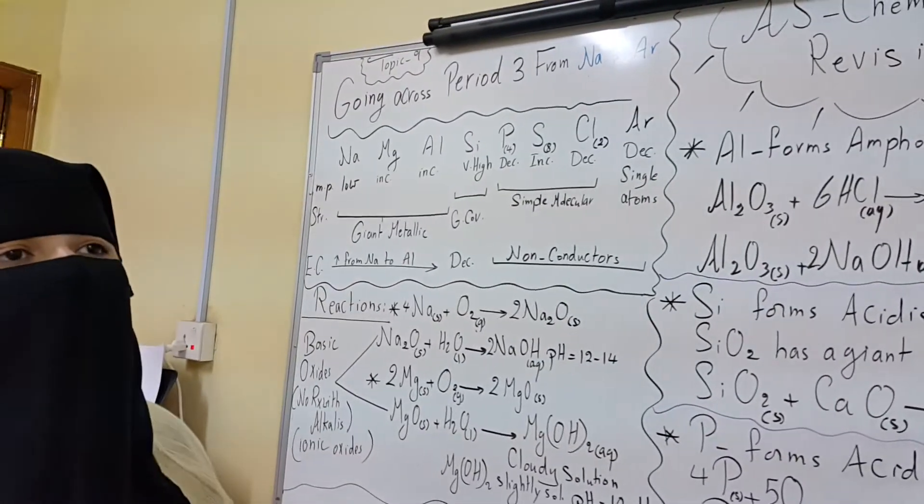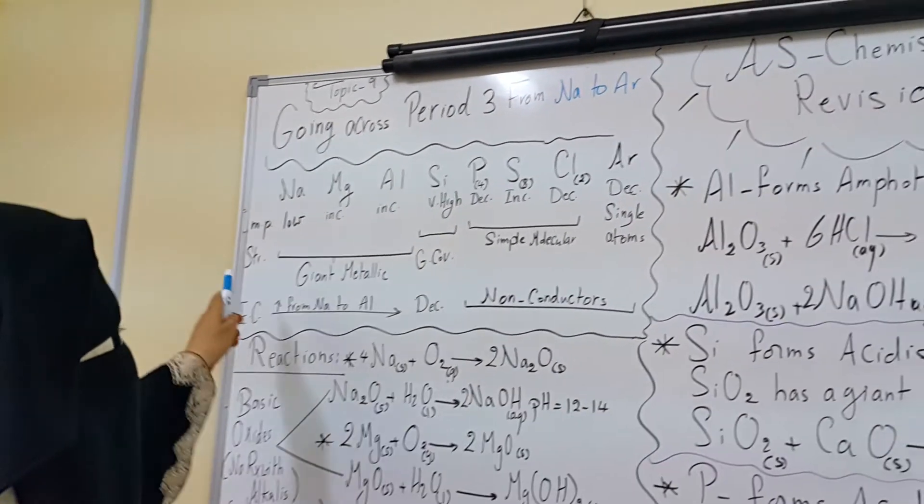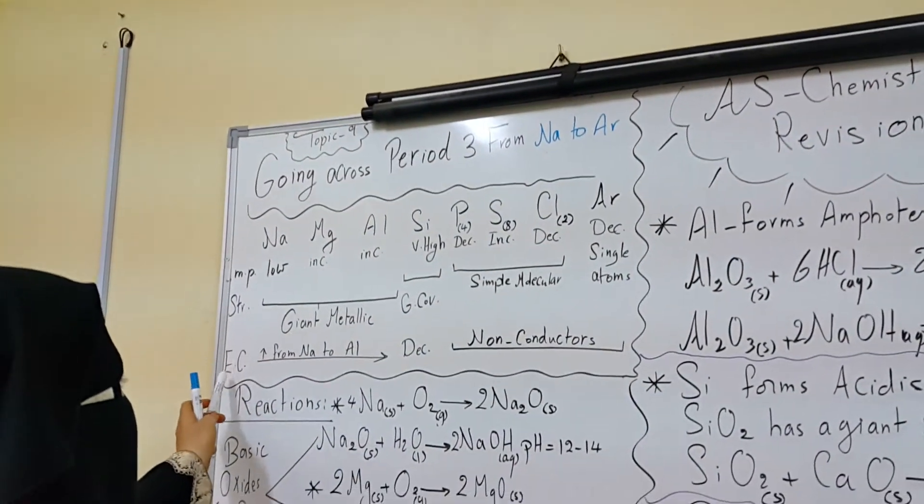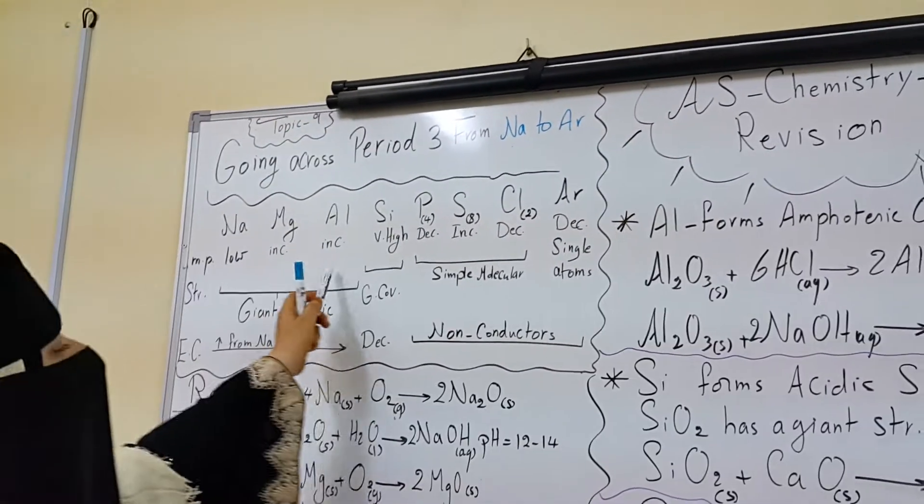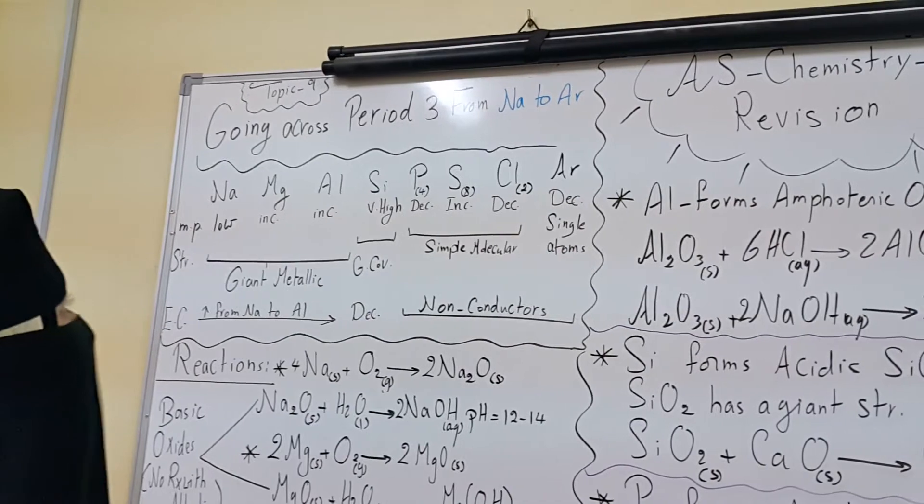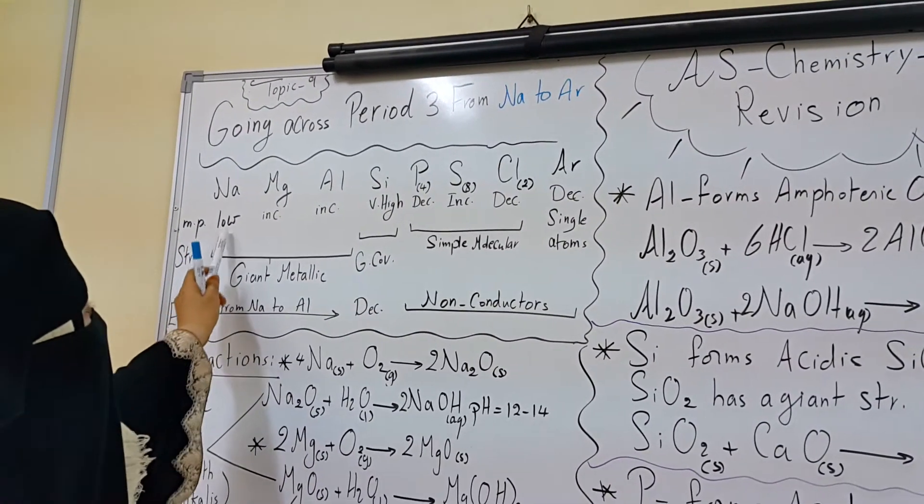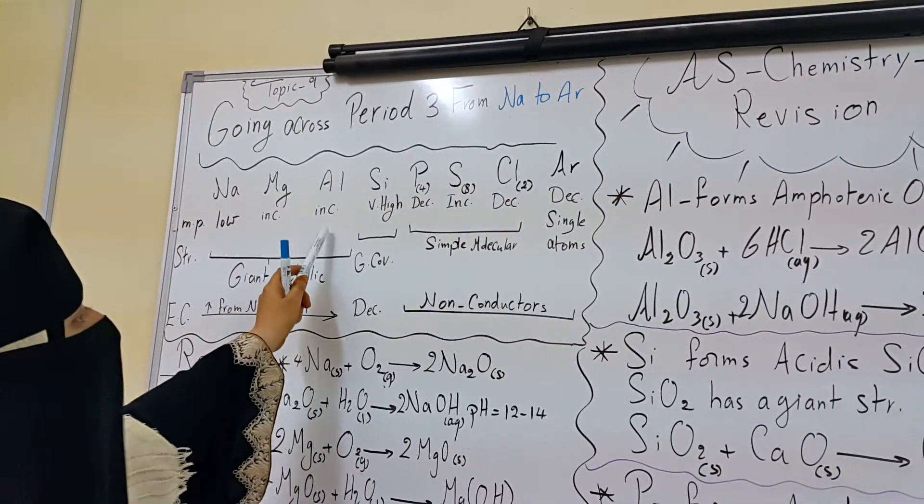Across period 3, here we talk about variation in melting point and variation in structure and electric conductivity. When we go from sodium to magnesium to aluminum, melting point increases gradually. This is because sodium has one valence electron, magnesium 2, aluminum 3.